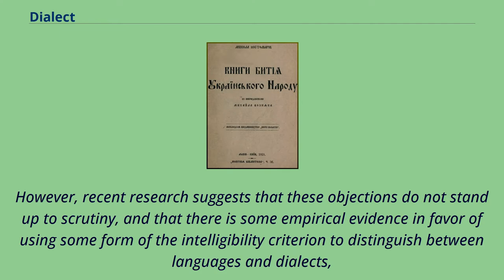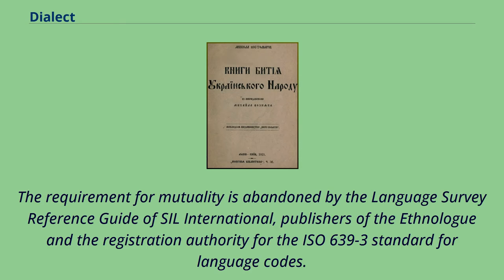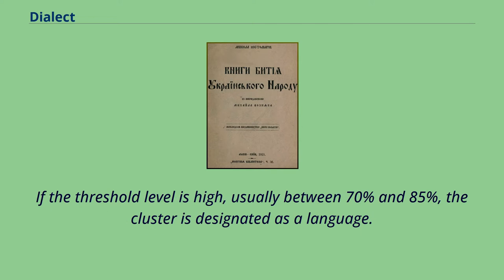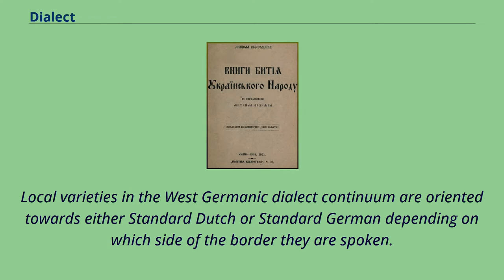However, recent research suggests that these objections do not stand up to scrutiny, and that there is some empirical evidence in favor of using some form of the intelligibility criterion to distinguish between languages and dialects, though mutuality may not be as relevant as initially thought. The requirement for mutuality is abandoned by the Language Survey Reference Guide of SIL International, publishers of the Ethnologue and the Registration Authority for the ISO 639-3 standard. They define a dialect cluster as a central variety together with all those varieties whose speakers understand the central variety at a specified threshold level, usually between 70% and 85%, designated as a language.